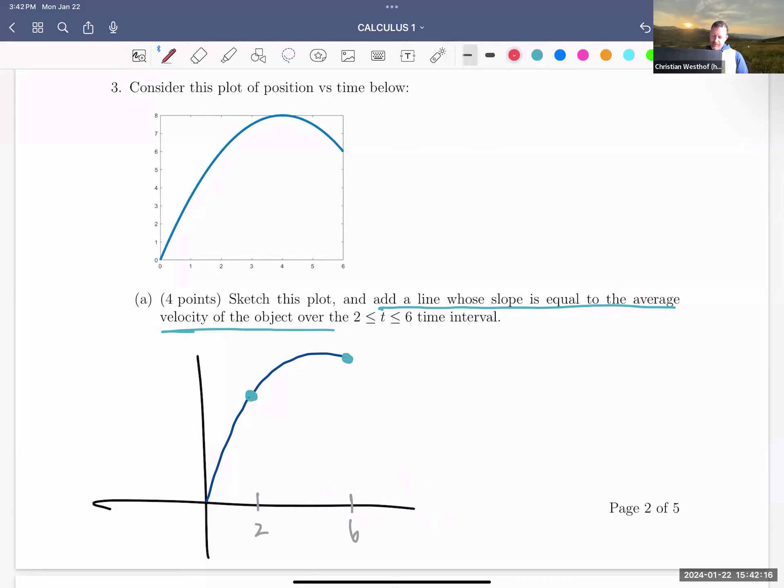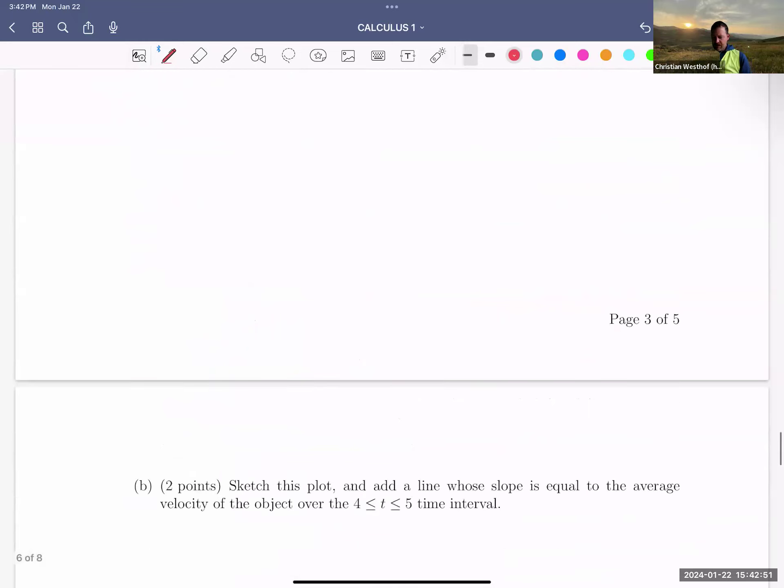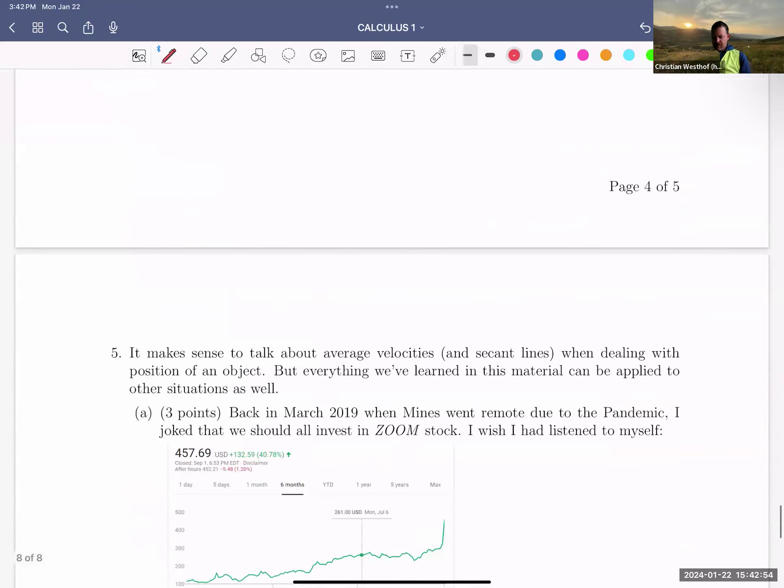Find the line whose slope is equal to the average velocity over the time interval two to six. So here's two, here's six, and we just decided the average velocity over a particular interval is the slope of that secant line. Add a line whose slope is equal to the average velocity of the object. So a point at two, a point at six, and my graph is a little off. Let's see, I'm going to fix that. There we go. There's six. Okay, so if we draw that line, it's the slope of this line is equal to the average velocity of our object over the closed time interval two to six. We're connecting two ideas that the slope of a secant line is the same as the average velocity over that interval.